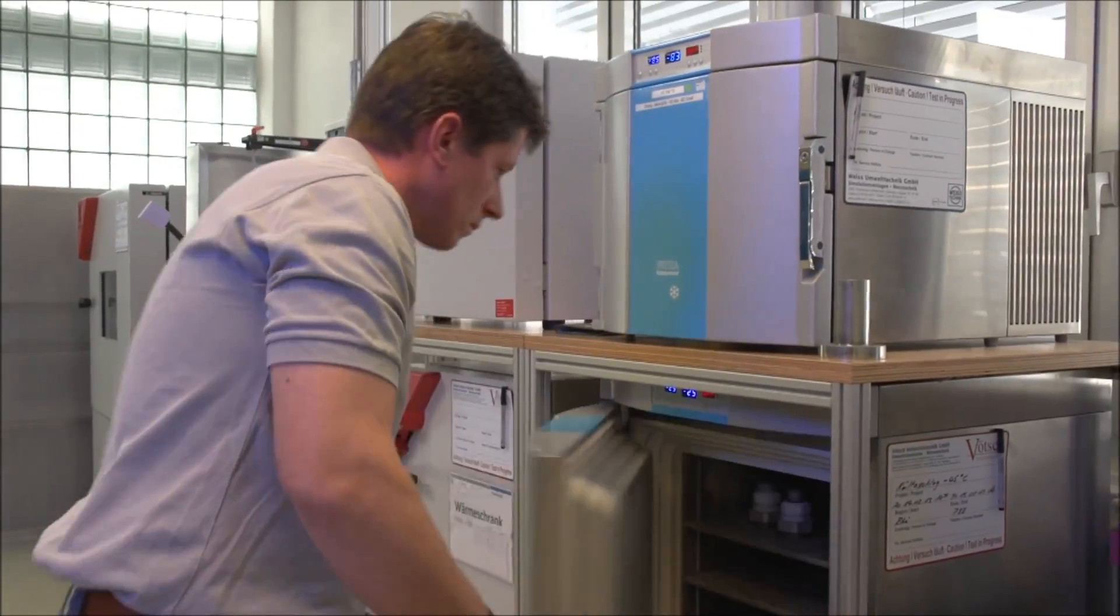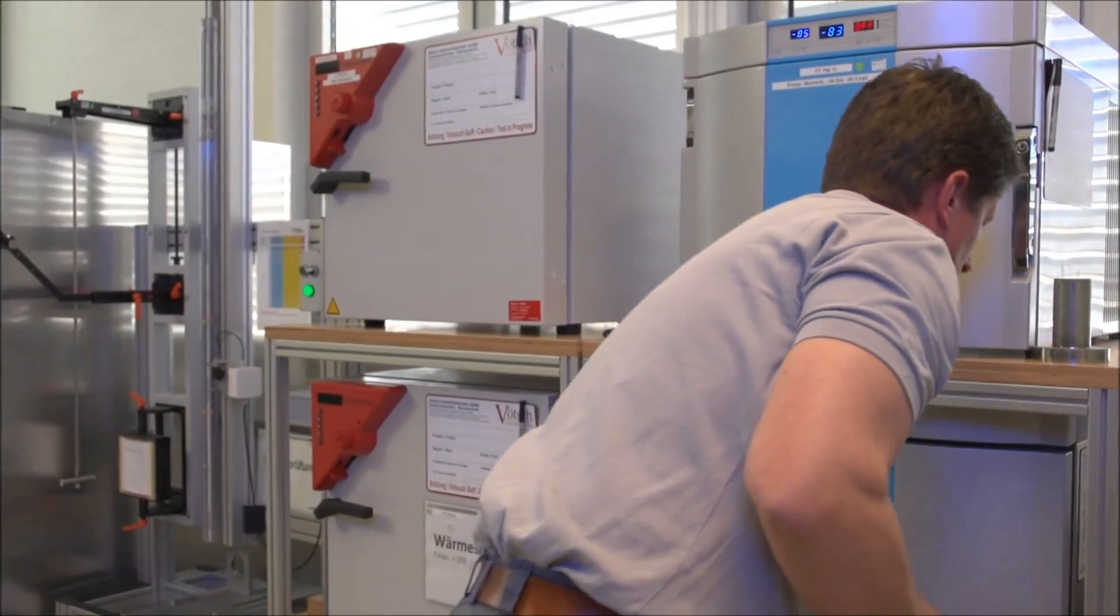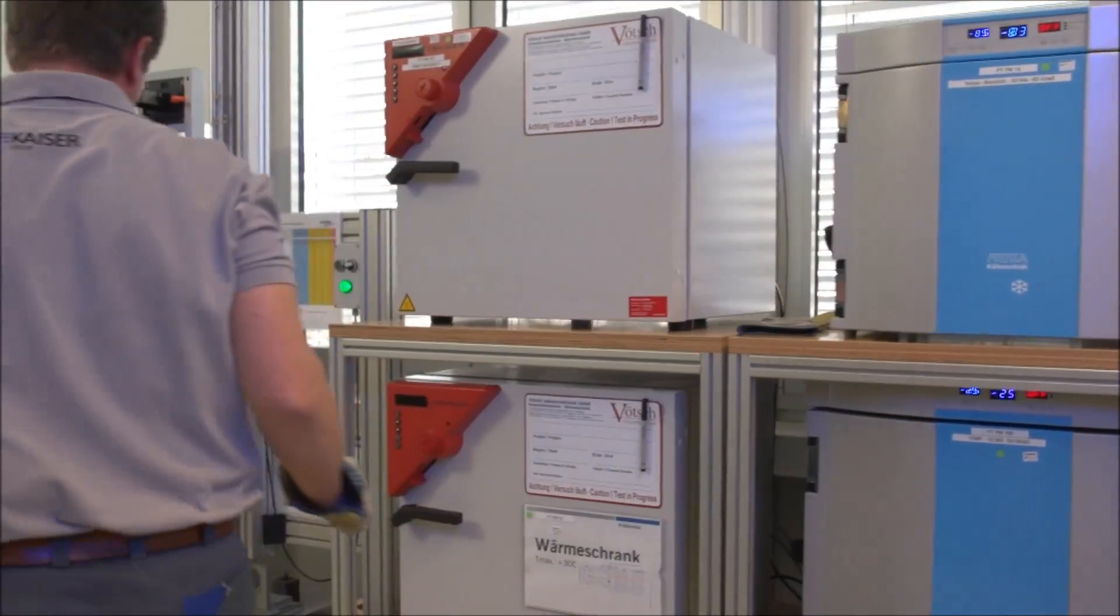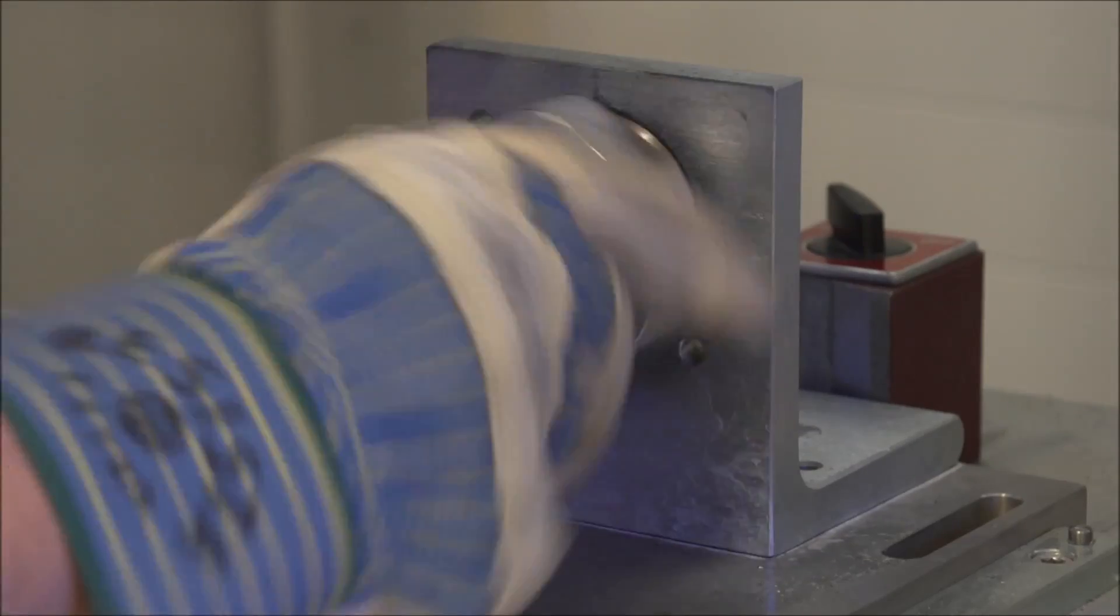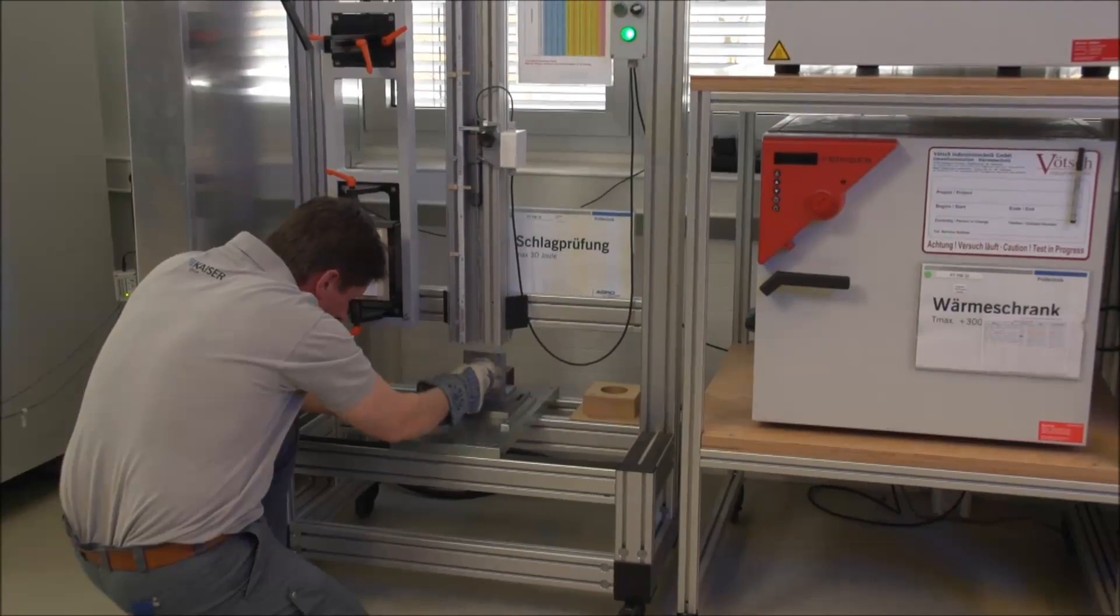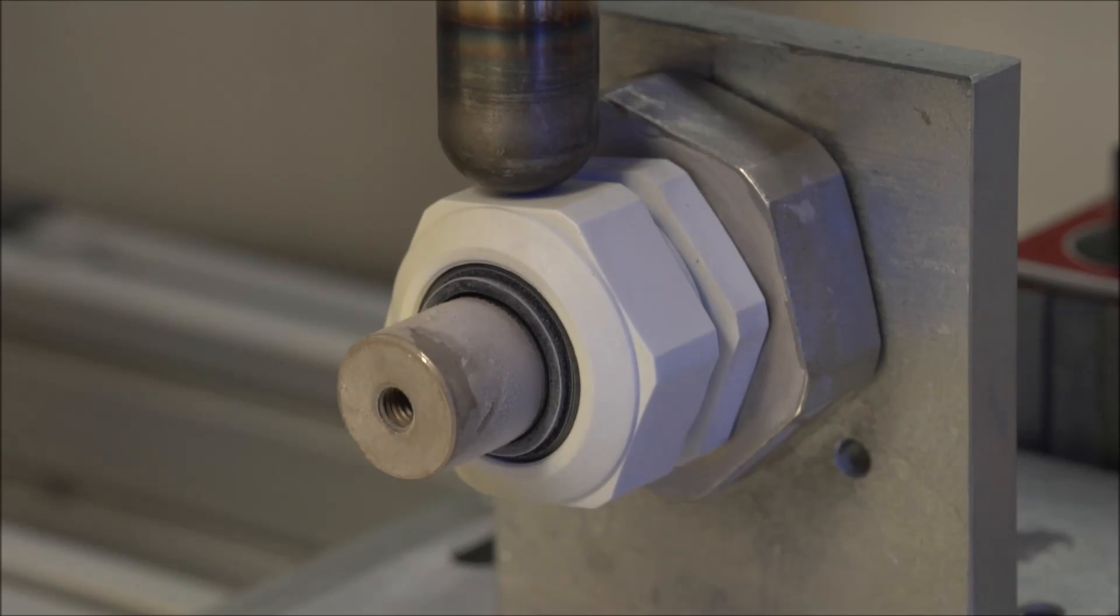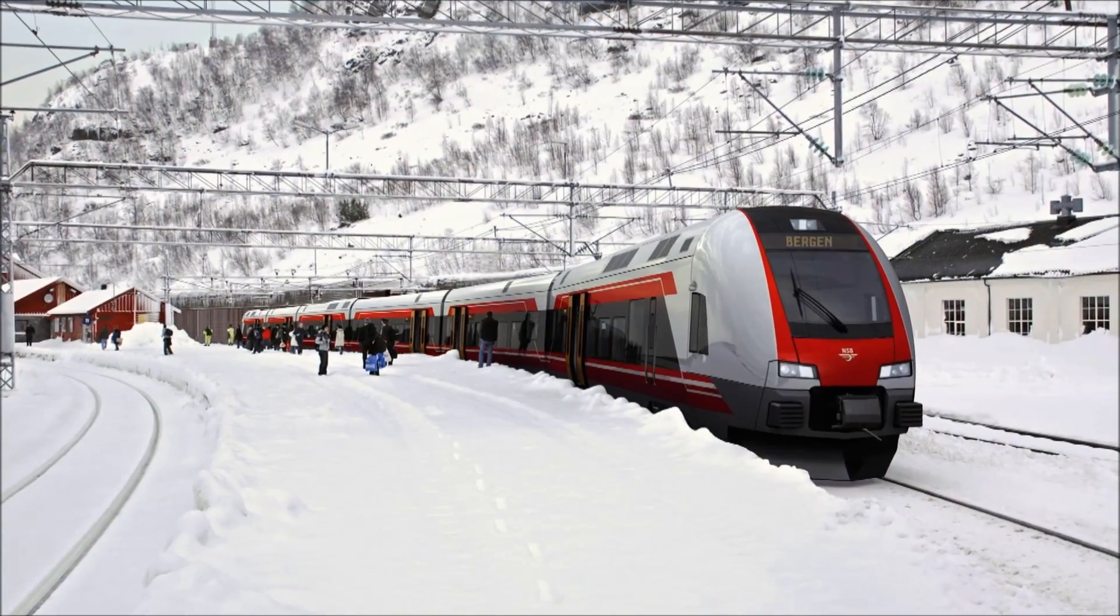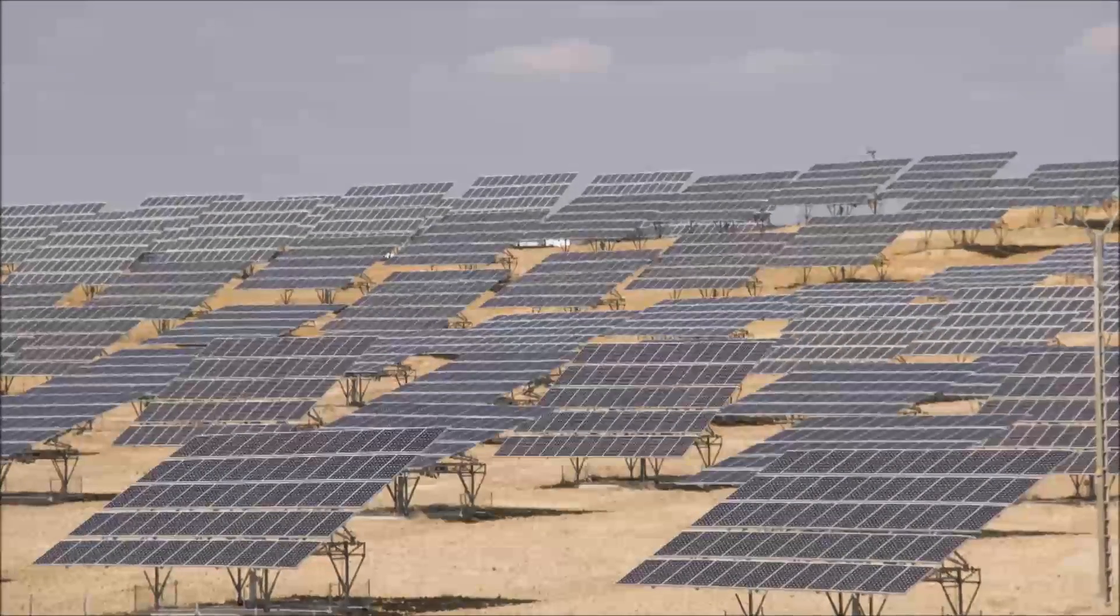The ultimate test of endurance is the impact test. A cable gland is first cooled to a temperature far below freezing and immediately afterwards it must withstand an impact load of up to 20 joules. The same procedure is repeated at the maximum temperature. Passing this test shows that the cable gland can operate reliably whatever the temperature, no matter if used in the bitter Siberian cold or the brutal heat of the Sahara.